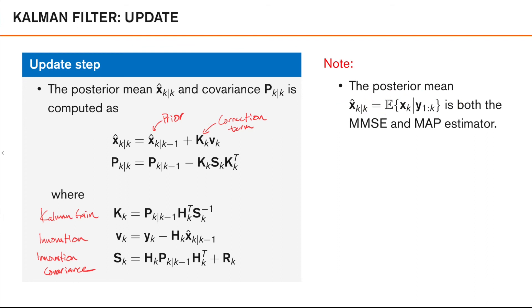Since the posterior is Gaussian, and the mean of a Gaussian random variable coincides with the maximum of a Gaussian density, the Kalman filter is actually the optimal estimator both in the minimum mean squared error sense and in the maximum a posteriori sense.